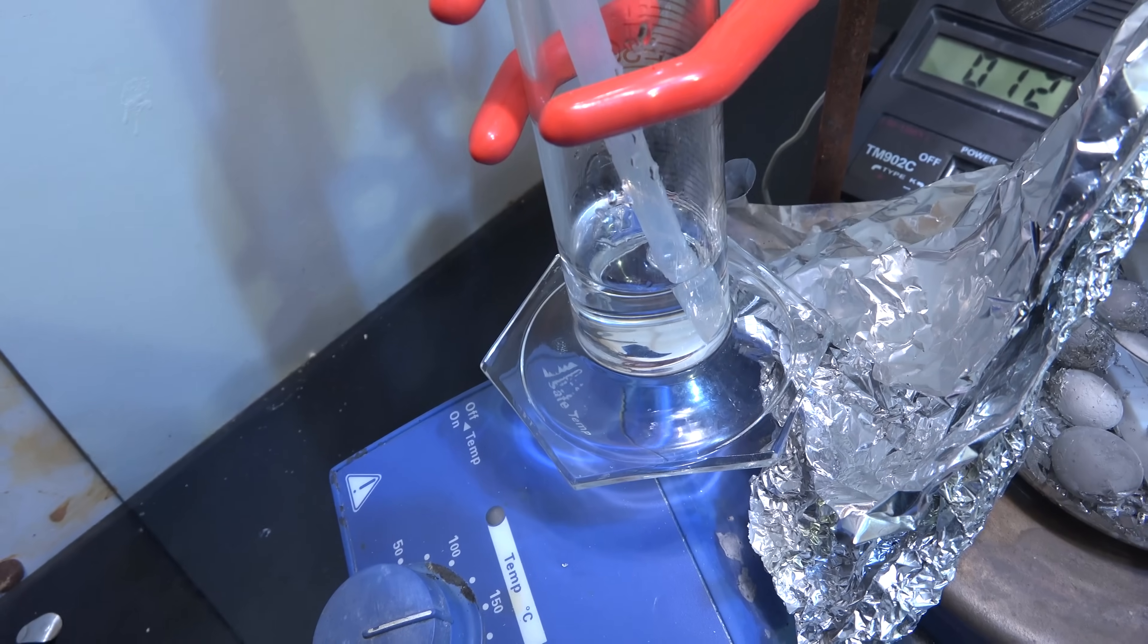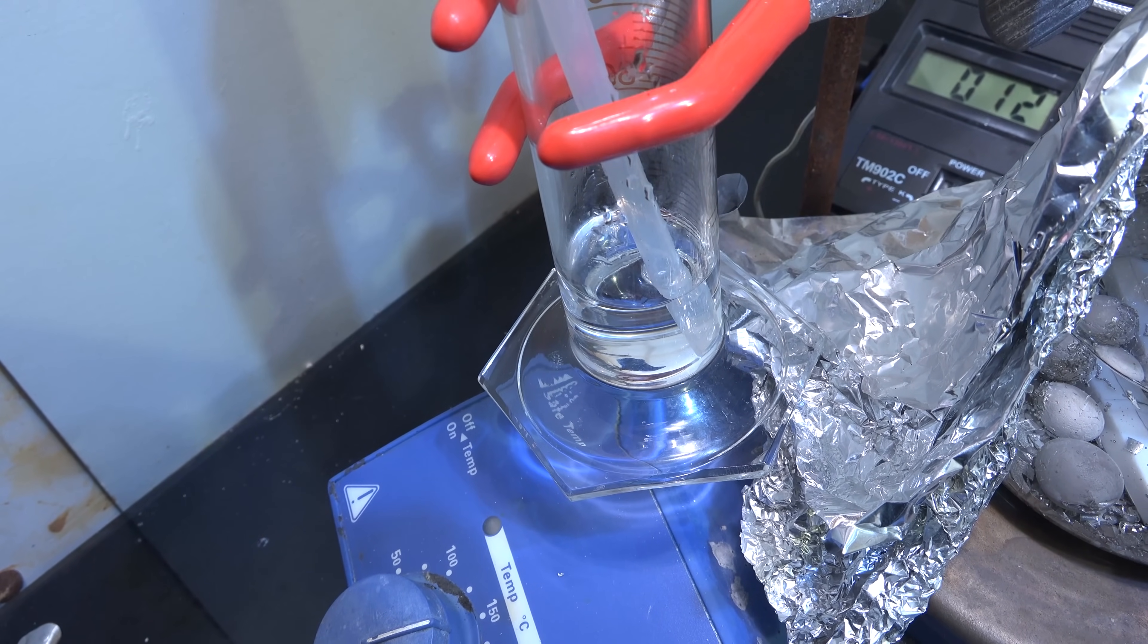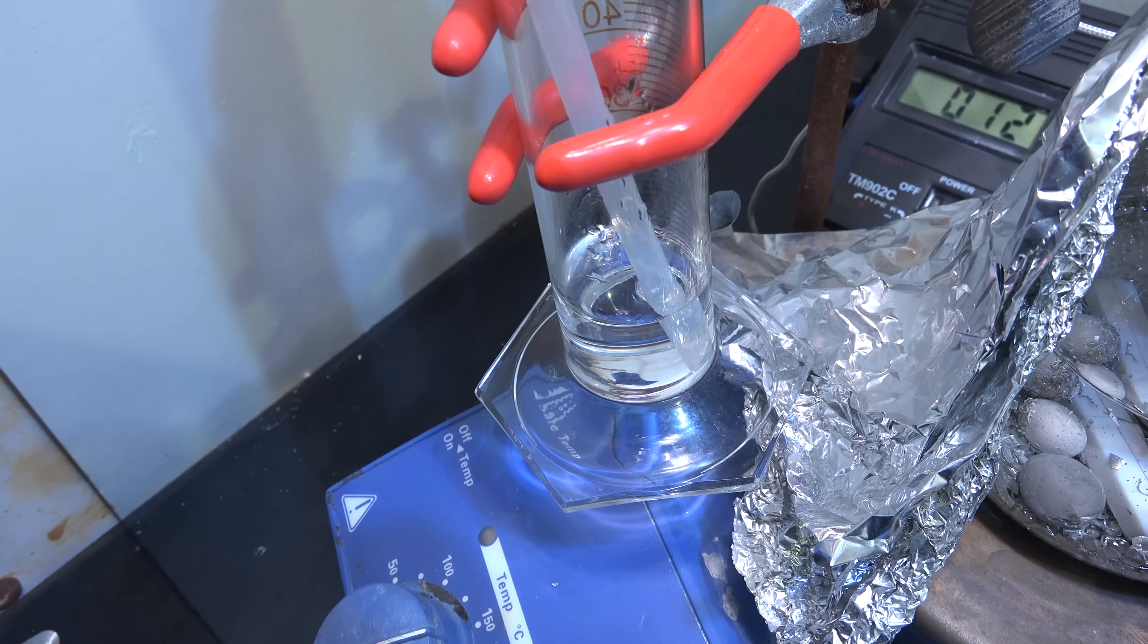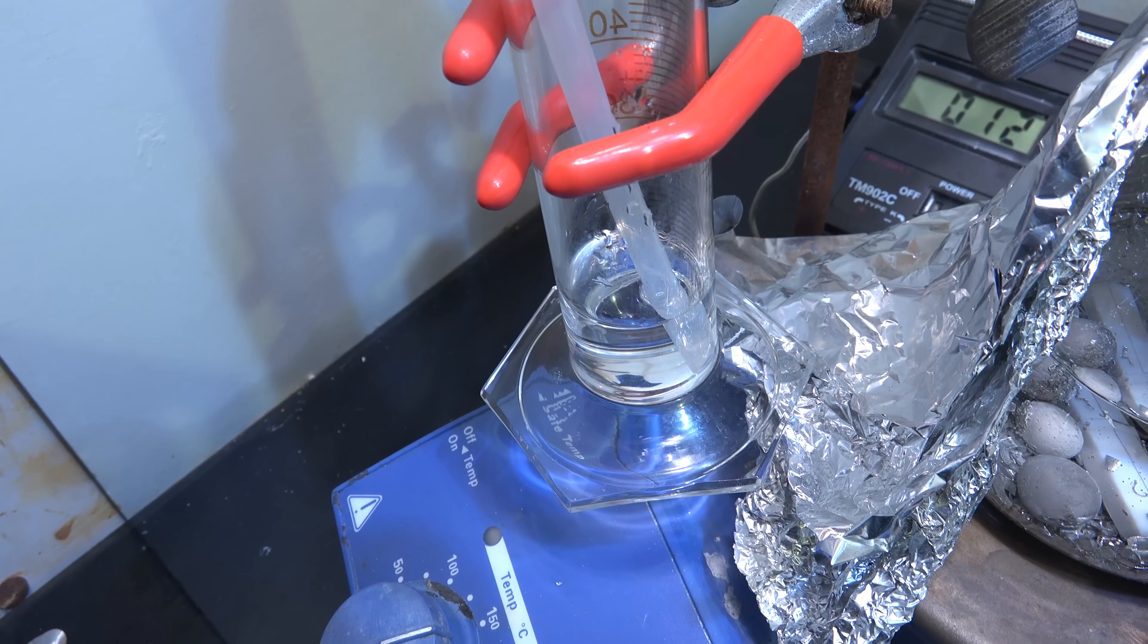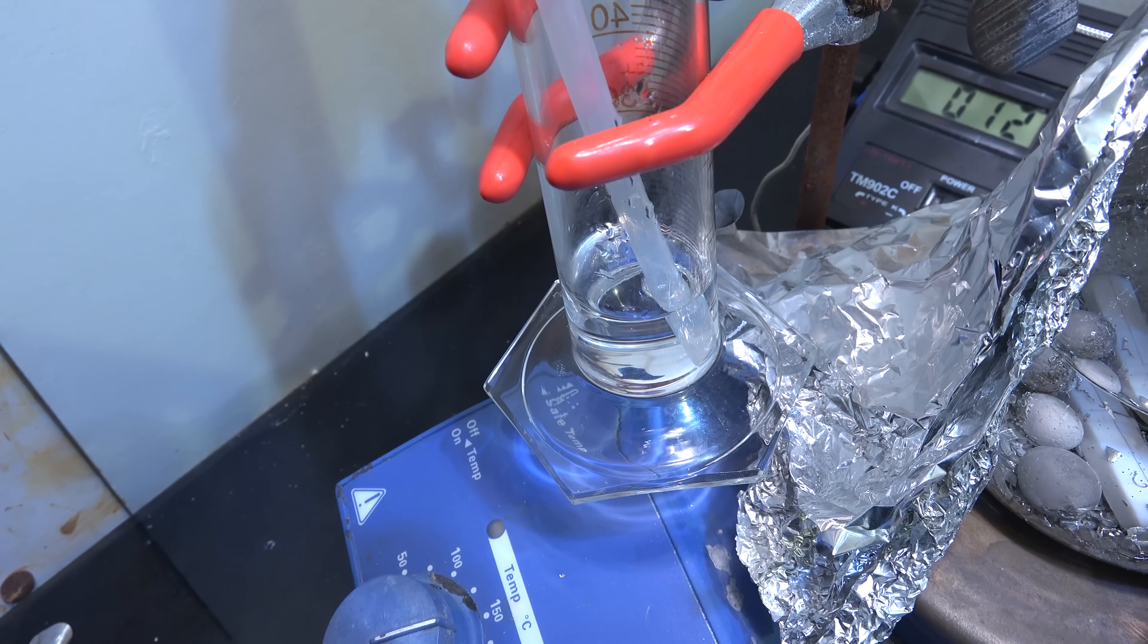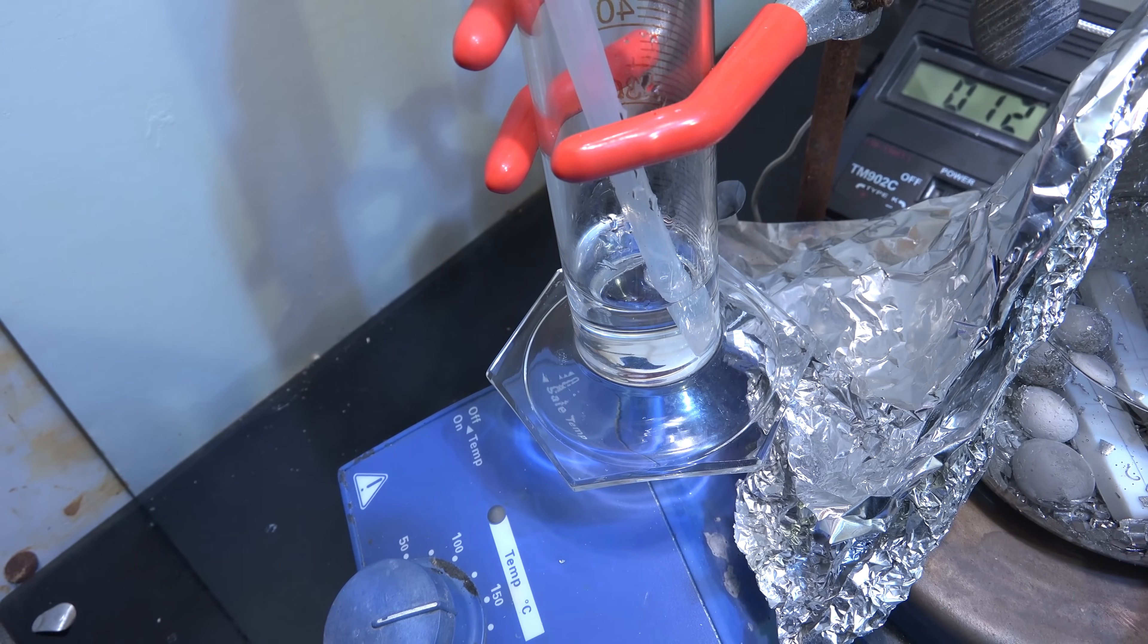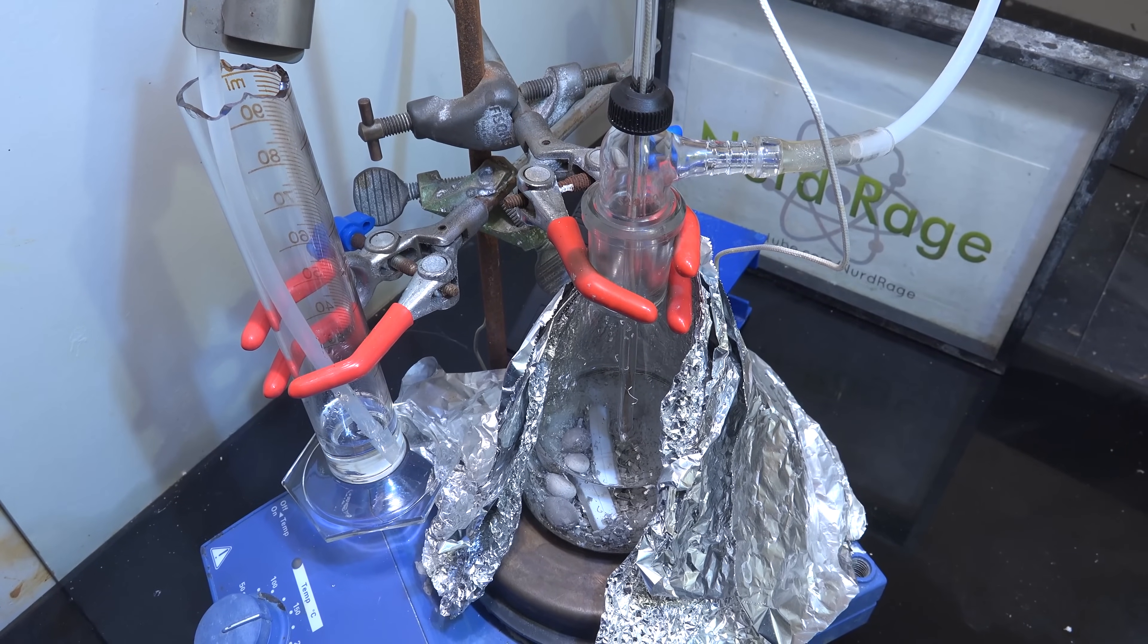Meanwhile back at the adapter we also connect the tube to a bubbler. The idea behind the bubbler is that all gas generated is directed out the bubbler so we can monitor the reaction and prevent air from backflowing. All it is is a container with mineral oil. Do not use water because if the bubbler backflows it'll suck water into the reaction mixture and explode. Anyway, make sure the entire apparatus is airtight except for the bubbler.